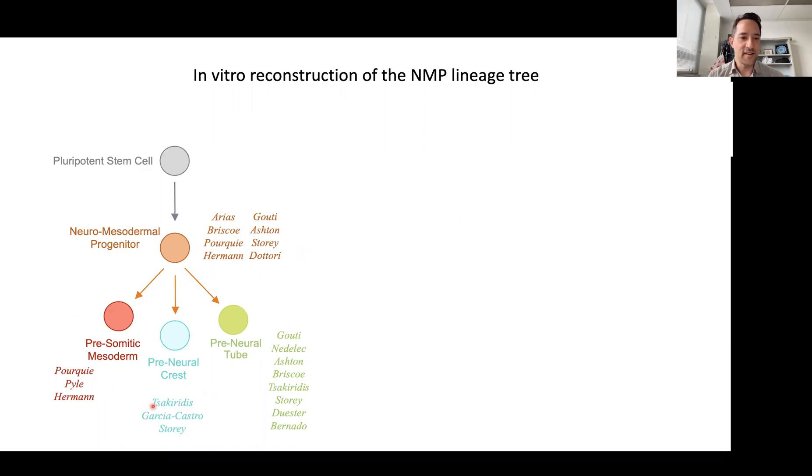There are other labs that had focused on using in vitro NMPs to derive, for example, pre-somitic mesoderm, pre-neural crest, or the pre-neural tube. The pre-neural tube is a particularly popular one.